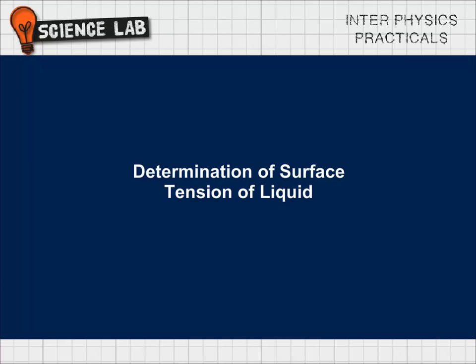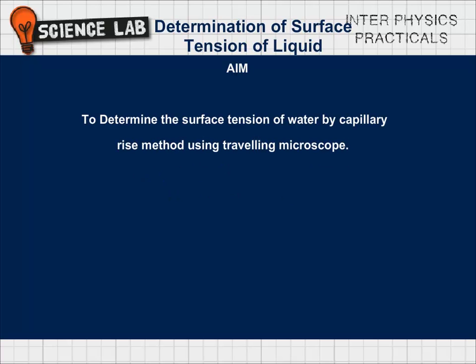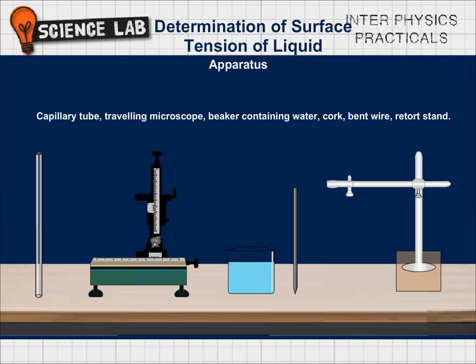Determination of surface tension of liquid. Aim: To determine the surface tension of water by capillary rise method using a travelling microscope. Apparatus: Capillary tube, travelling microscope, beaker containing water, bent wire, retort stand.